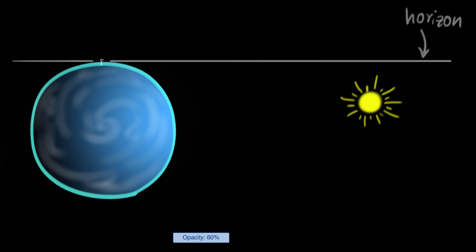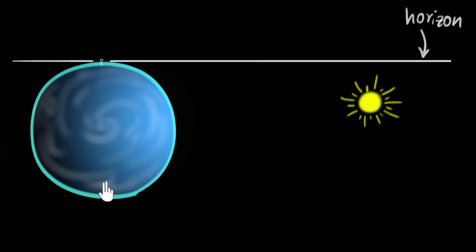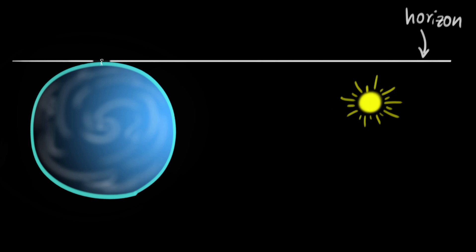The horizon is just a tangent line that we draw to our earth's surface — specifically, a tangent line at the place where we are standing. And so when things are below it, like right now the sun is below that, we can't see it, because if we try to draw any rays of light from the sun...